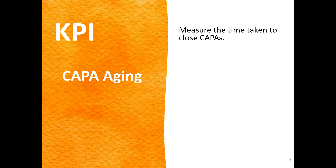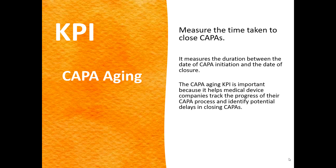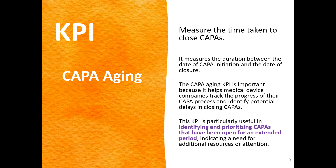Another KPI would be CAPA aging — the measured time to close a CAPA. For your CAPAs that are being closed, how long is it taking to close them? It measures the duration between the date of CAPA initiation and the date of closure. You want to be closing your CAPAs as quickly as possible. Obviously, you don't close them unless you've done all the work required, but you still want an efficient system. If CAPAs are taking a very long time to close, you might need to put more resources on them, or figure out why — for example, perhaps people in your organisation don't have the right problem-solving skills to get to the root cause.